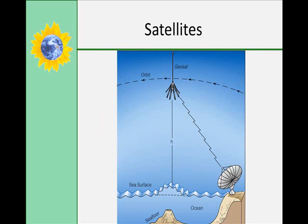Satellites that are in geosynchronous orbit are able to measure small differences by bouncing microwaves off the ocean surface. Using this new technology, scientists have discovered that the ocean surface is not perfectly flat. Differences in the height of the ocean surface are caused by ocean floor features.